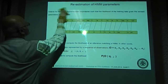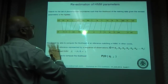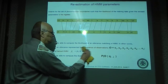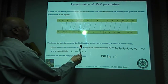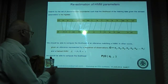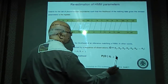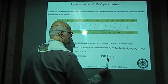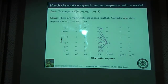We need to search for the set of phoneme boundaries such that the likelihood of the training data given the revised parameters is highest. For all this to happen, we need to be able to compute the likelihood of the training data. So we will first address: given a set of observations O1 through OT and a trained HMM lambda, our goal is to compute the likelihood of the feature vector sequence given the model. We can compute this if we first compute the probability given a specific state sequence Q.